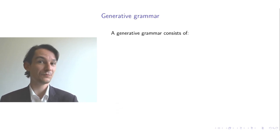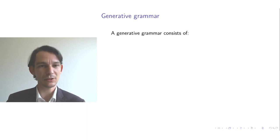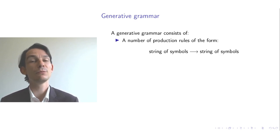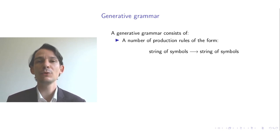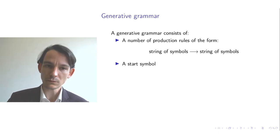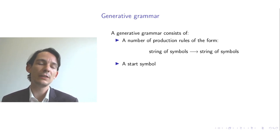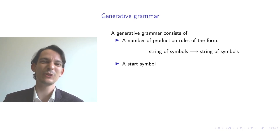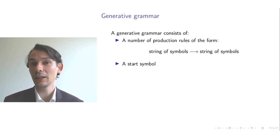So let's look at generative grammar. Generative grammar is a system that consists of a number of production rules. Each of the production rules has the shape of a string of symbols on the left-hand side, an arrow, and a string of symbols on the right-hand side. The generative grammar also has a start symbol. The intention of writing this down is to generate a language, so every generative grammar is a language generator.